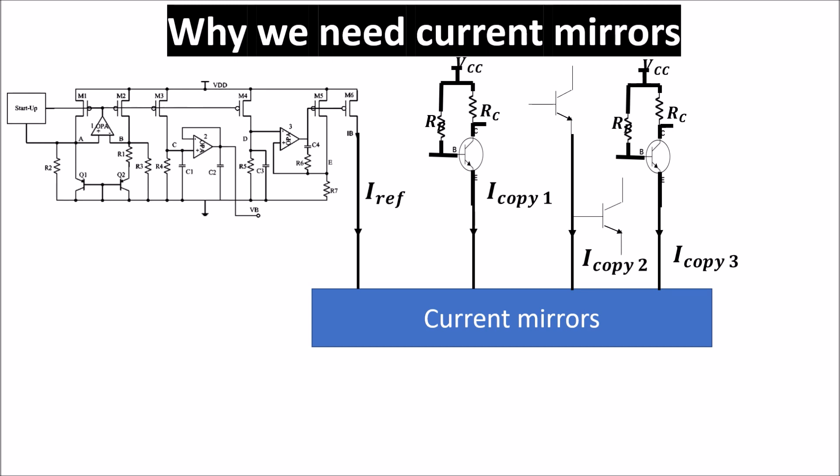Of course a copy can be also a fraction or a multiple of the reference current, and it has to be also temperature independent and load independent. So it has not to change if the load changes.